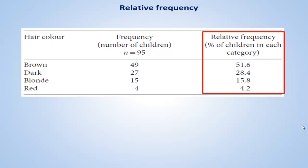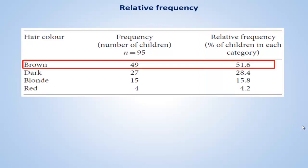The third column on this table shows the percentage of children in each hair color category. This table tells us that over half of the children, 51.6%, had brown hair. This seems to be more helpful than knowing that 49 out of 95 children had brown hair.